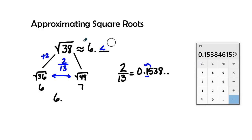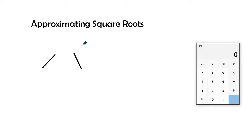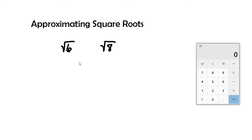Now let's move on to our next problem, which asks us to compare two radicals: the square root of 6 and the square root of 8. When comparing radicals we ask ourselves which is greater than or less than the other. Since our radicals go in order from smallest to greatest, radical 6 is less than radical 8.